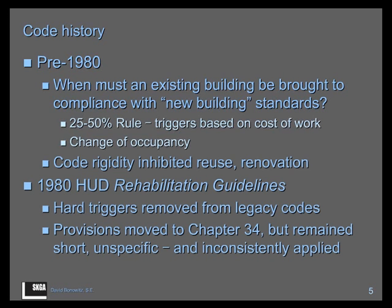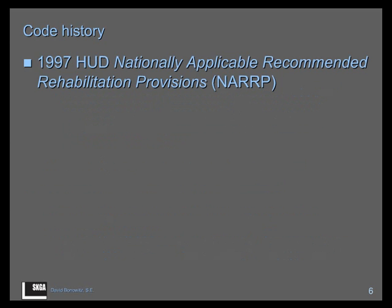Around 1980, HUD — the Department of Housing and Urban Development at the federal level — said this isn't working for us. It's discouraging the renovation of housing, so we're going to change this. They ended up removing some of those old triggers from the building code, and that's the way it stayed for about a decade. Meanwhile, in the 1990s, they were working on an alternative, which eventually became the IEBC.